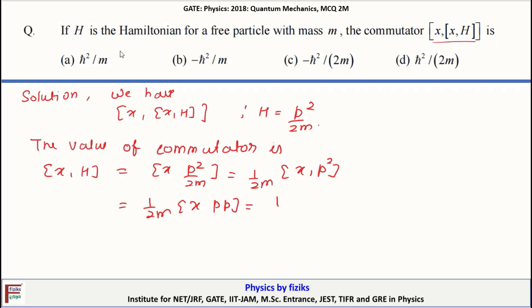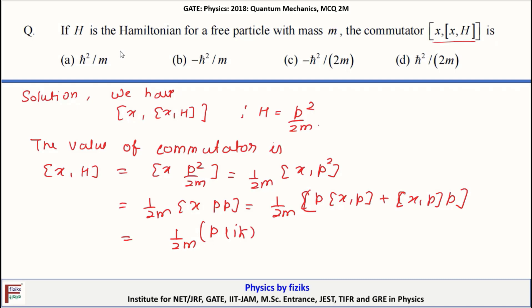This can be written as 1/(2M) times { P [X, P] + [X, P] P }, which gives 1/(2M) times { P (iħ) + (iħ) P }, that is iħ P/(2M) plus iħ P/(2M), equaling iħ P/M.